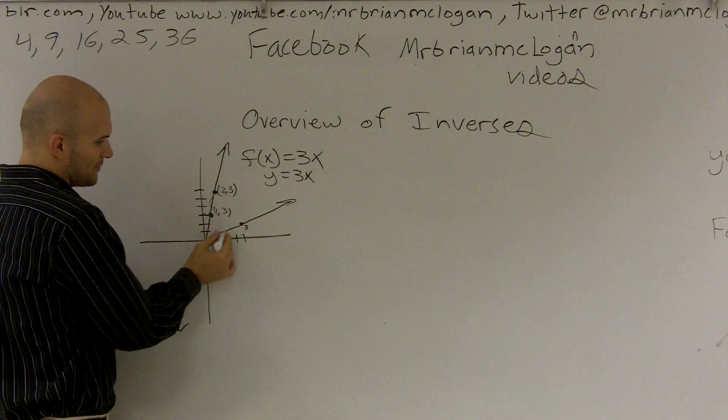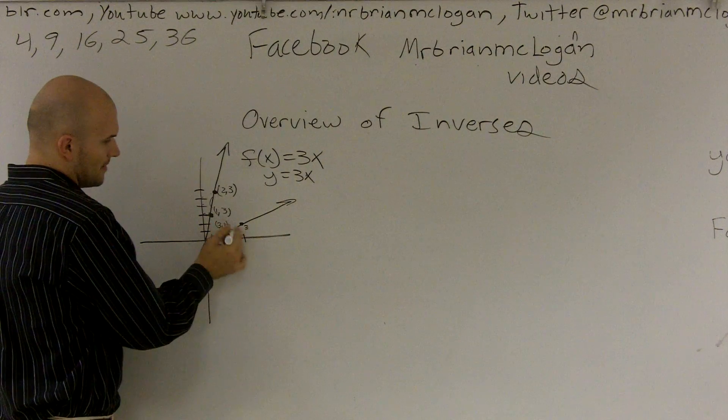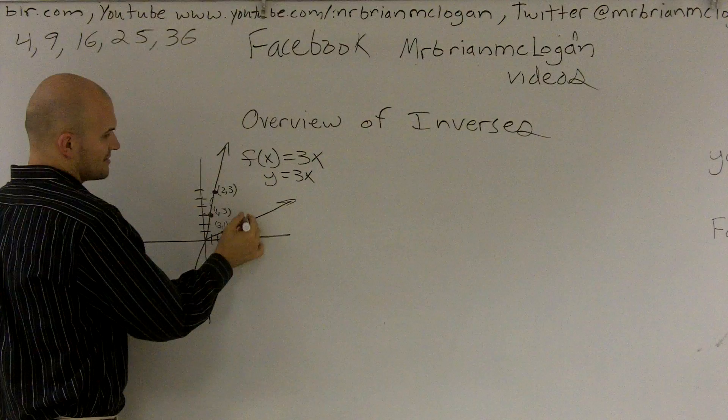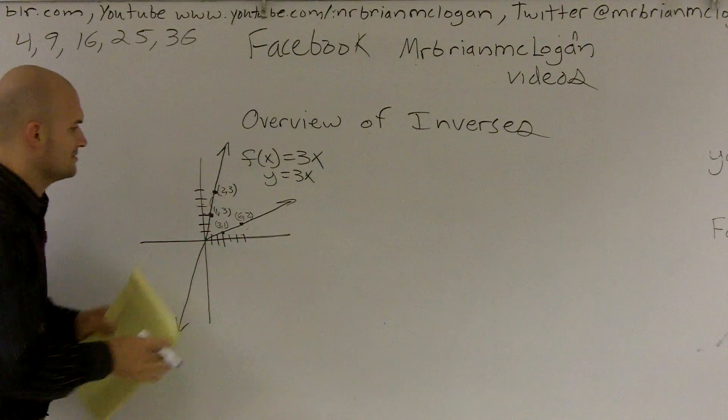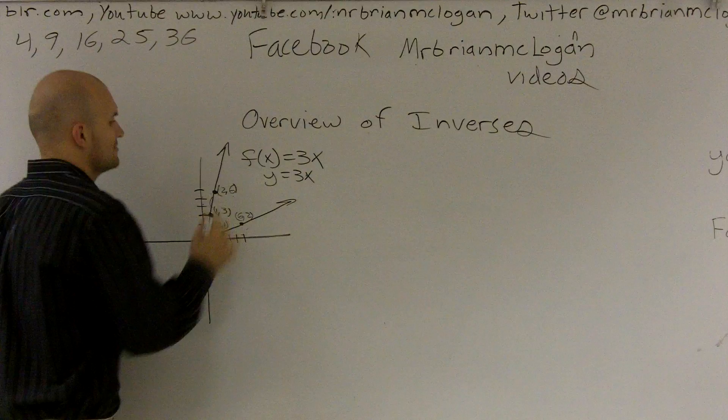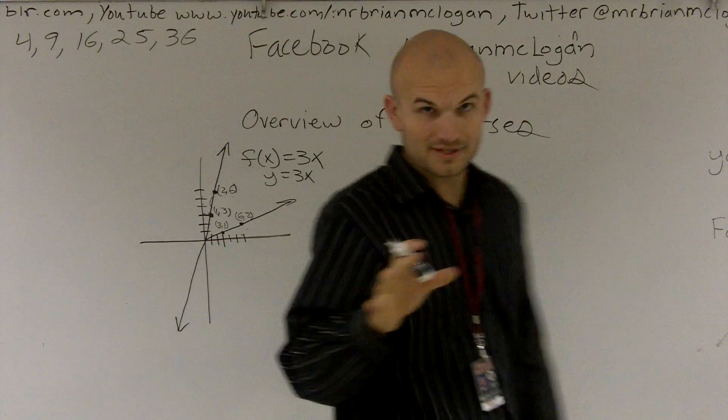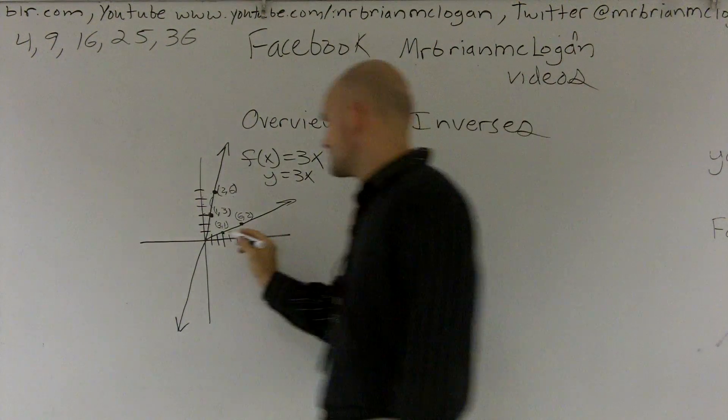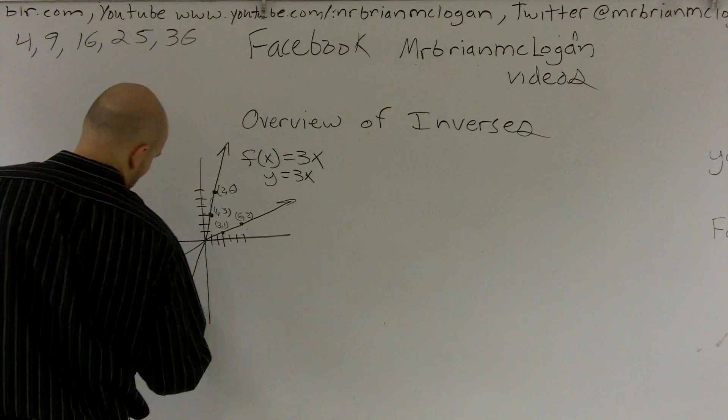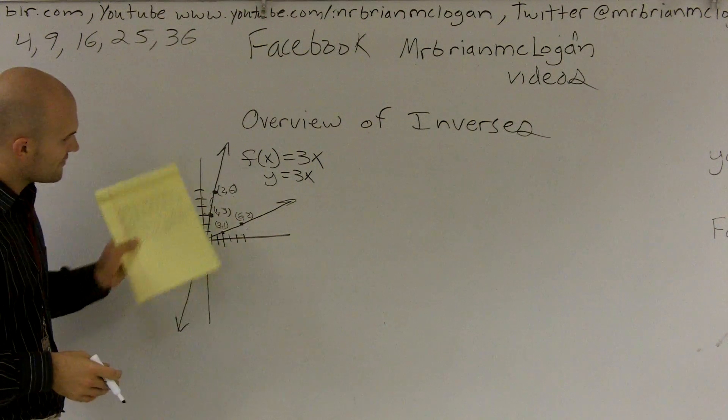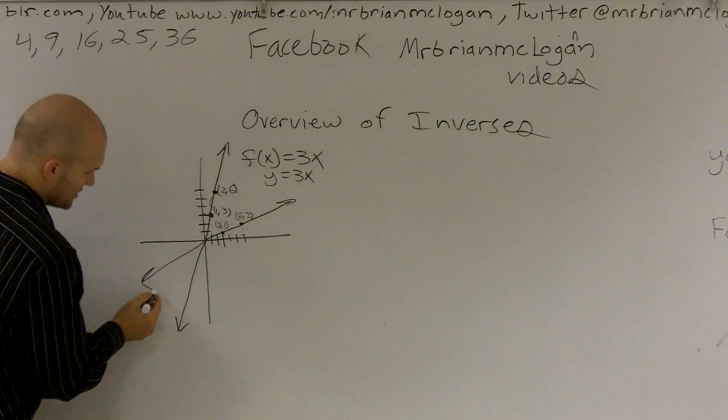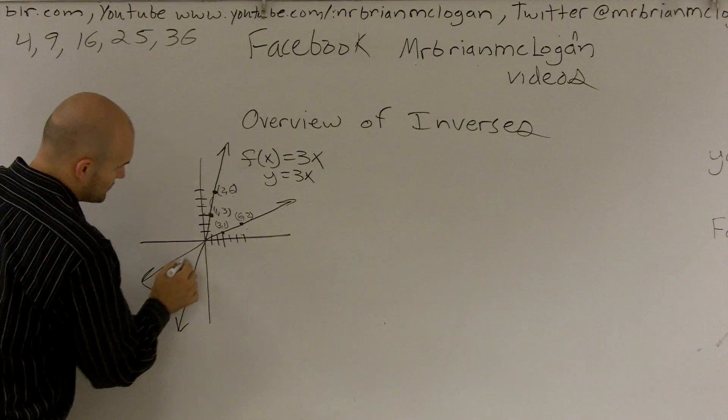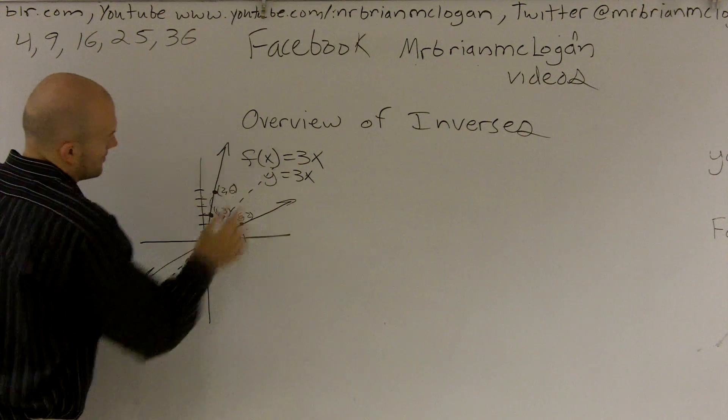So you have up 3, over 1, and then you go over 6, up 2. What you notice is each one of these coordinates—the graph is going to go infinitely this way. What you will see is these inverses are exact opposites of each other, and they actually have symmetry about what we call the x equals y line.